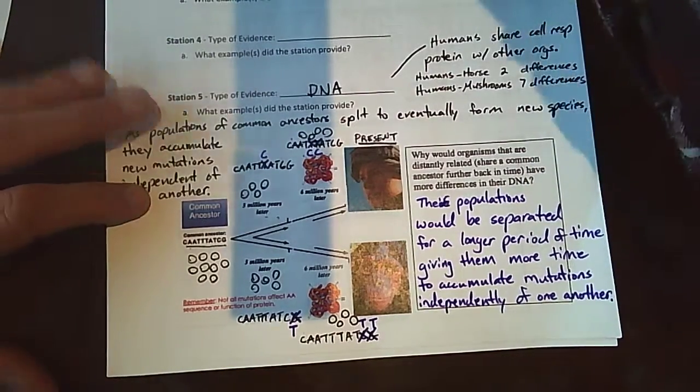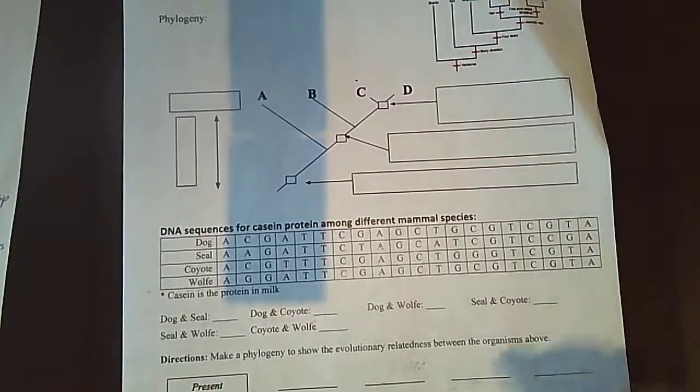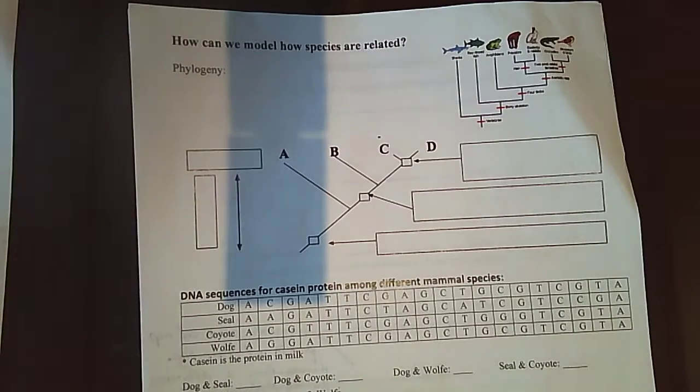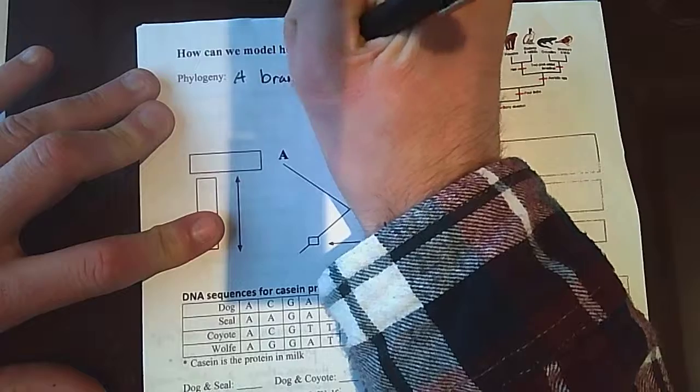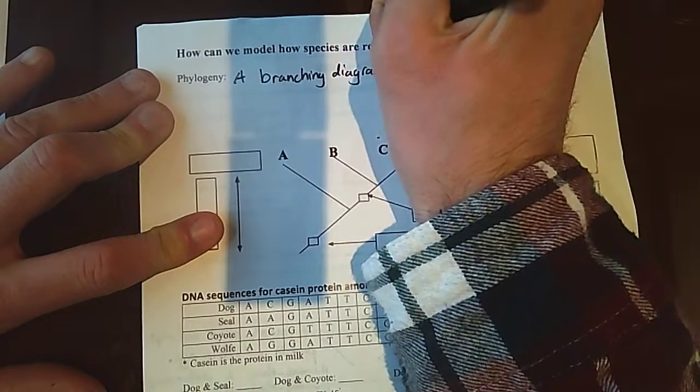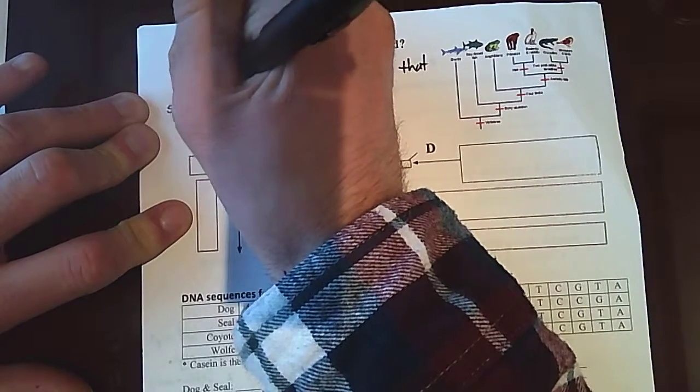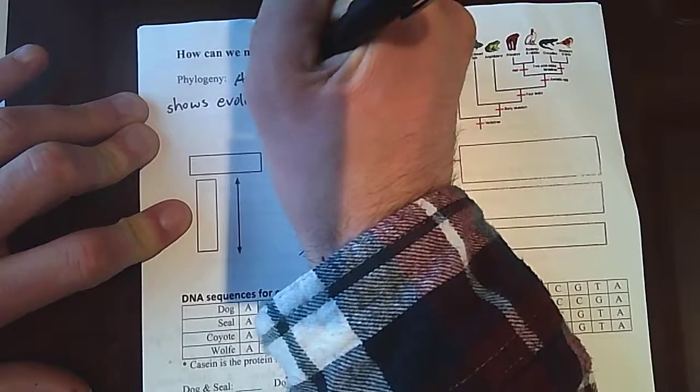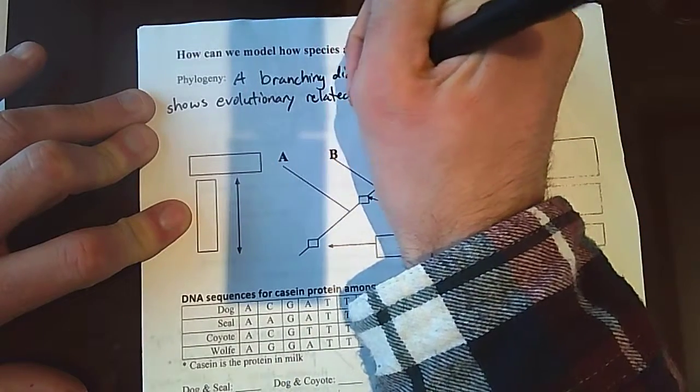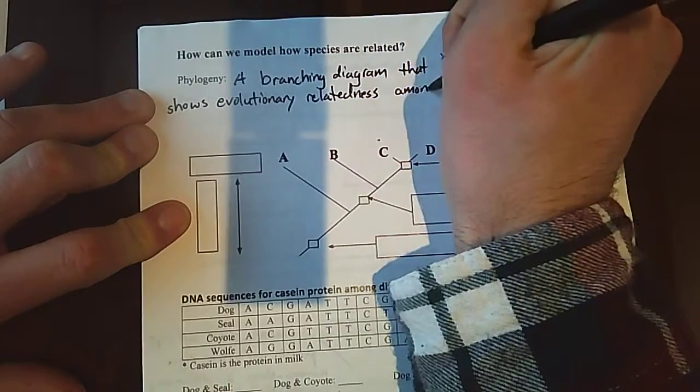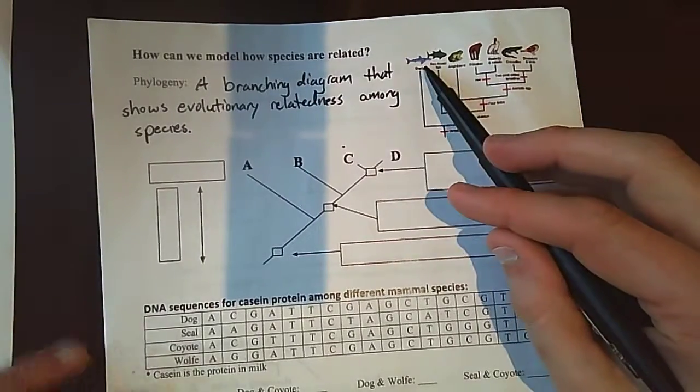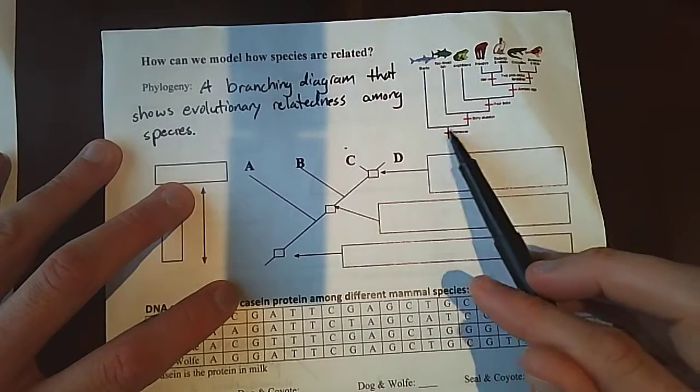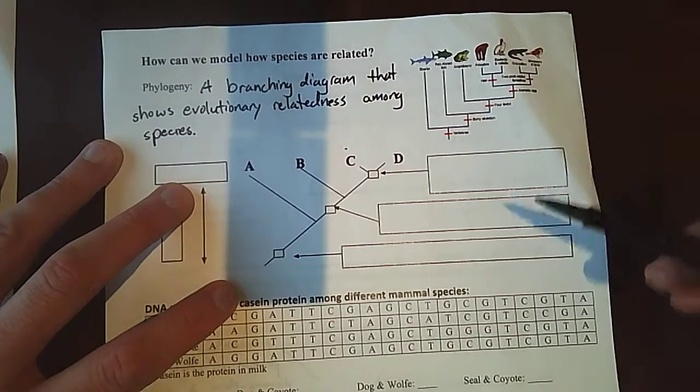So let's use this knowledge to try to construct models of how different species are related to one another. And we can do that by making a phylogeny. So a phylogeny is a branching diagram that shows evolutionary relatedness among species. So how does it work? Well, here's a finished one right here that shows how a lot of vertebrates, so organisms that all have a vertebrae, that backbone, are evolutionarily related, have a shared common ancestor back in time.